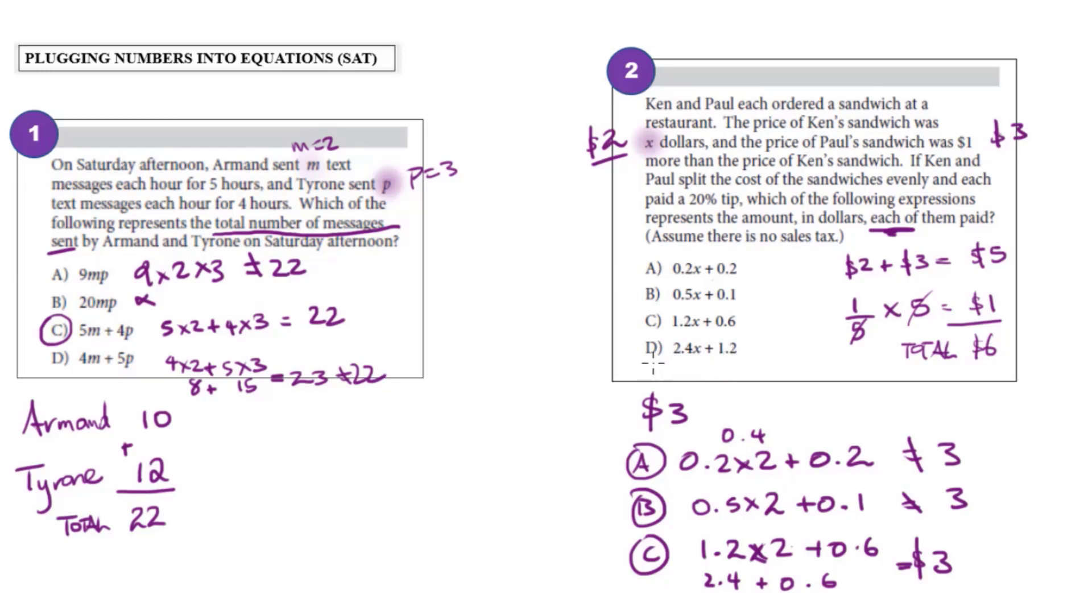If I had D 2.4x plus 1.2, that would be 2.4 times two plus 1.2. And I know that 2.4 times two will have to be way bigger than three. So already, I know that that wouldn't be three. Therefore, our answer is C.